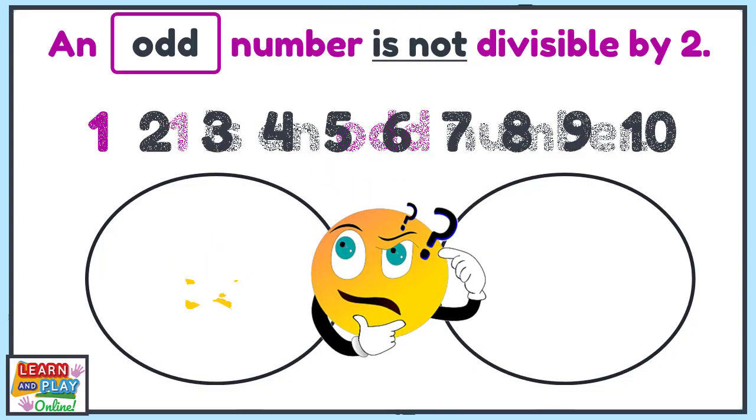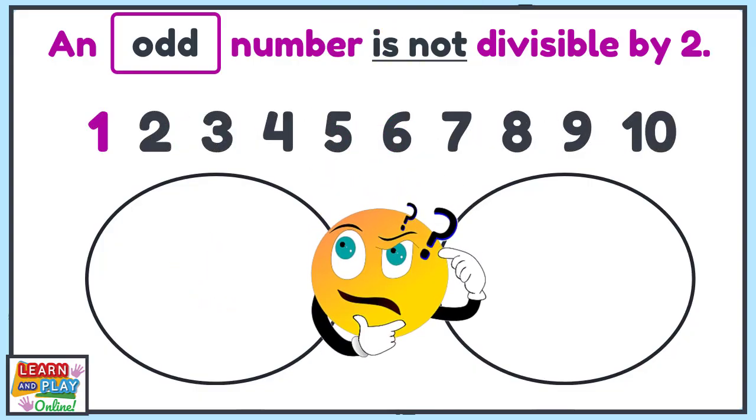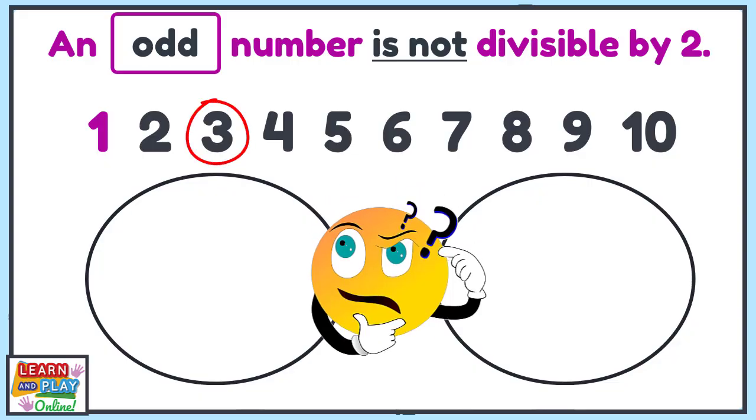Can you think of what the next odd number would be? If you said 3, you would be correct. This is because 3 is not divisible by 2. Let's double check that.